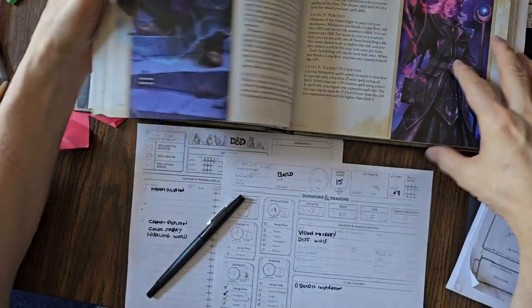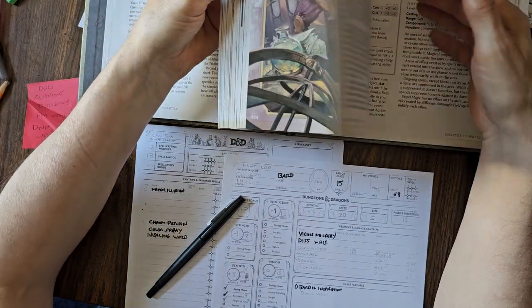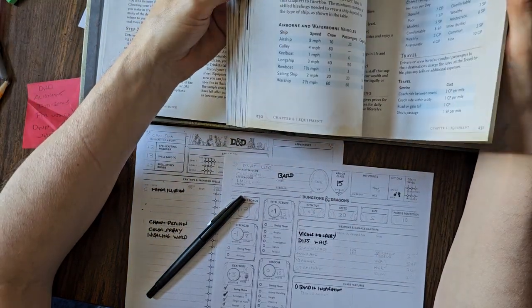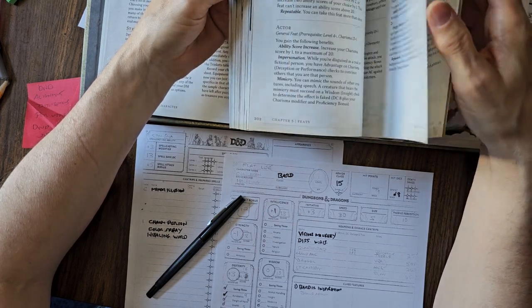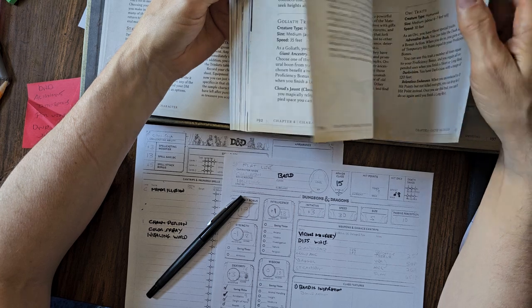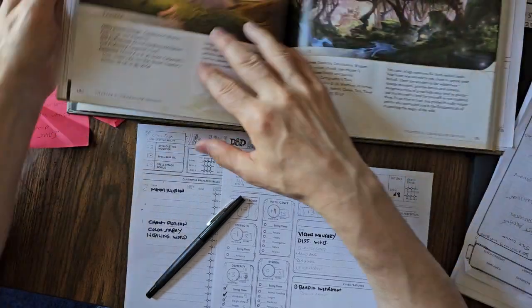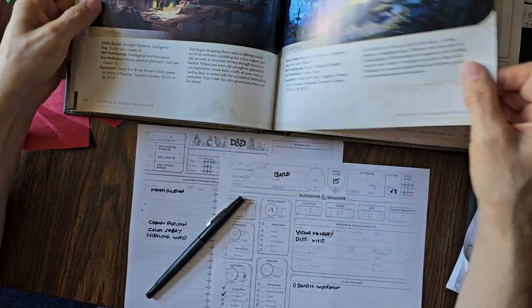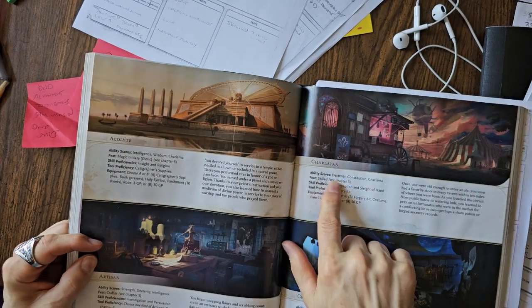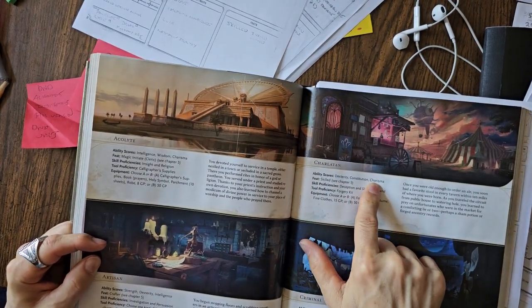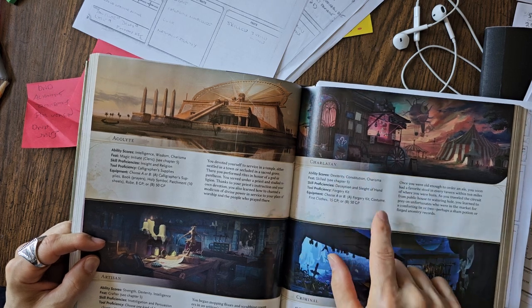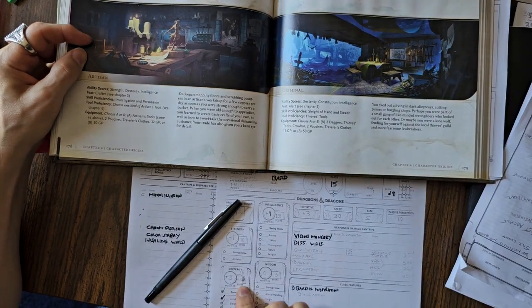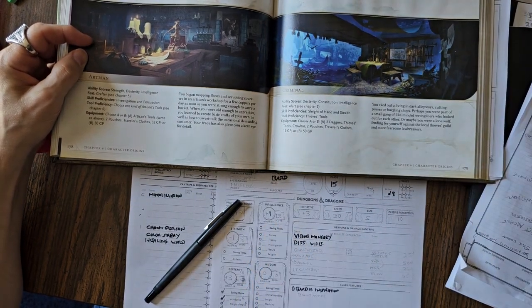Here's the reason I picked charlatan. I've already heard some people complain about backgrounds a little bit because they're like, well, there's only certain backgrounds that make sense. That's kind of true. There are certain backgrounds that make more sense than others. For a bard, a charlatan background makes a lot of sense because you can add scores to Dexterity, Constitution, or Charisma. You can add one to each or you can add two and one. I'm going to go two in Charisma and one in Dexterity.